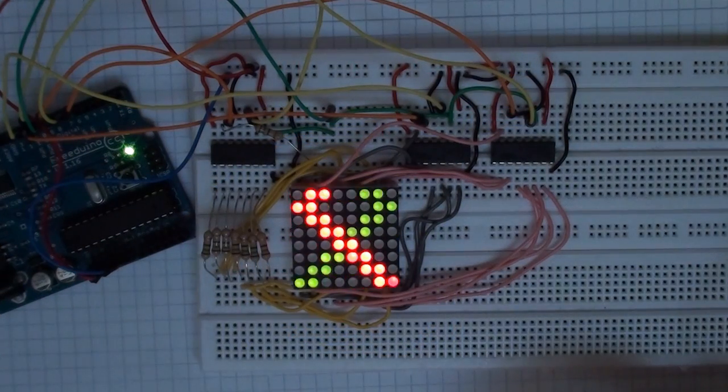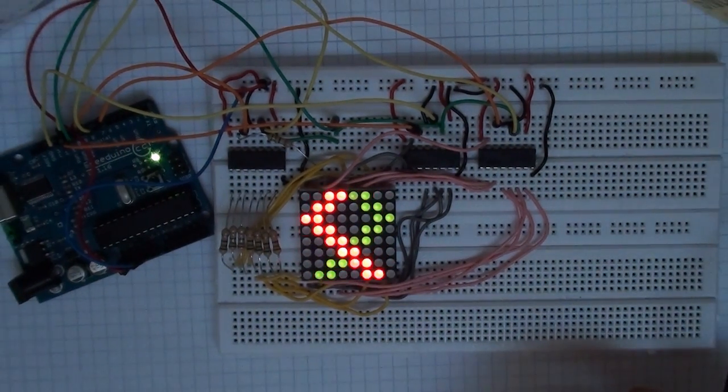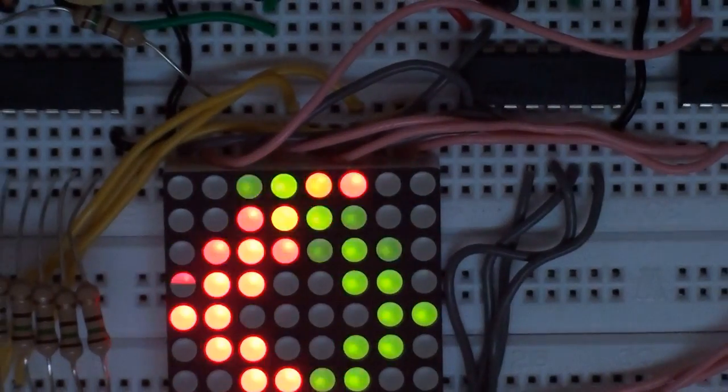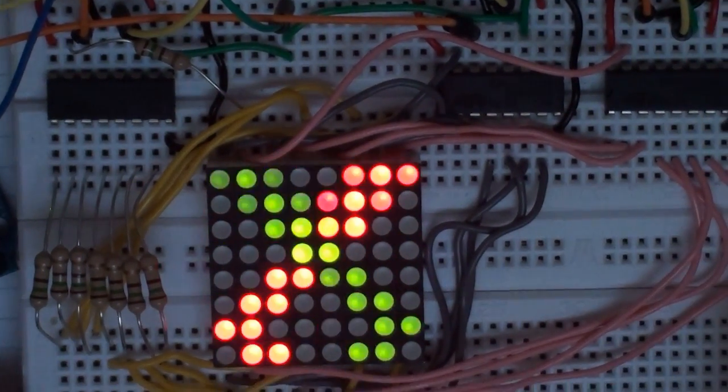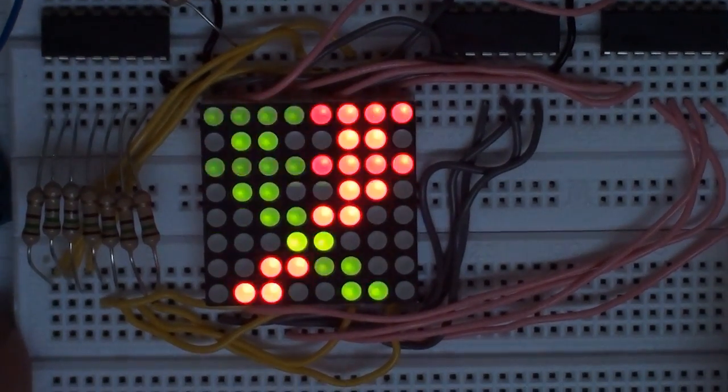I was able to update this circuit to add in a third 74HC595 for the red column. So now I have got one for the rows and then two, one for each of the columns, the red and the green columns.